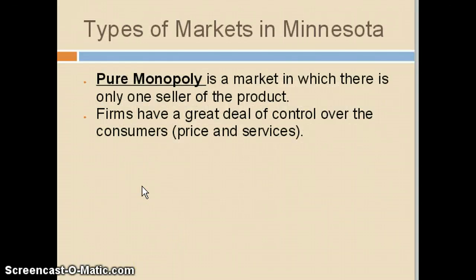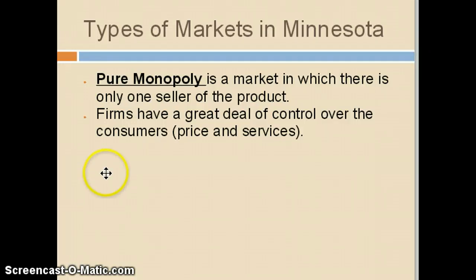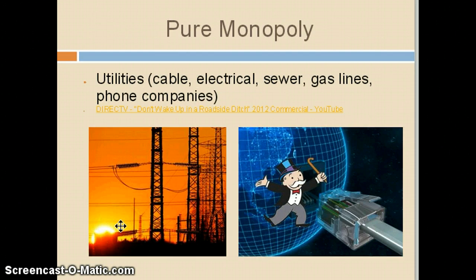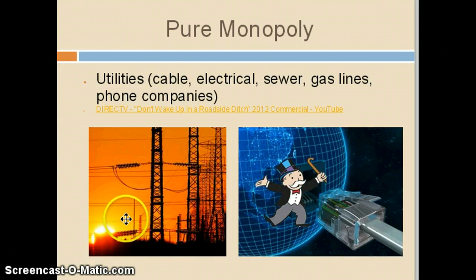I want to take a little bit of time now to go through the different types of markets that exist here in Minnesota and the United States under our free enterprise system. The first is a pure monopoly. A pure monopoly is a situation when there is one seller of a product, and these firms have a great deal of control over the price of that product or service. The product itself is pretty standard. Examples of a pure monopoly include utility companies like cable, electric, gas, and phone companies.